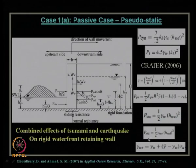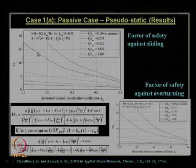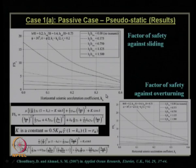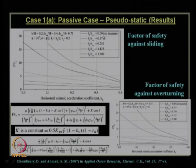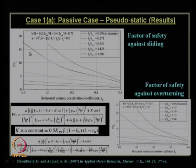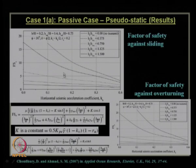The results for the passive state show the factor of safety against sliding mode with respect to various seismic horizontal acceleration coefficients k_h and various heights of tsunami wave relative to the still water level. When the tsunami height is zero, there is no tsunami. As tsunami height and seismicity (k_h) increase, the factor of safety against sliding decreases significantly. The combined effect can be obtained from the proposed design chart.